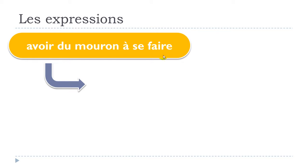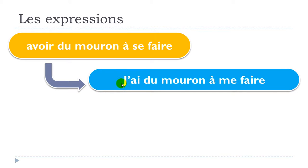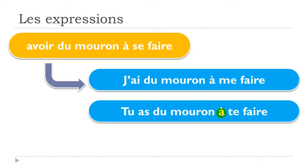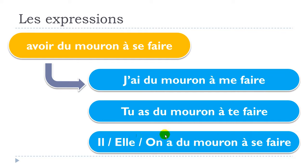The expression is AVOIR DU MOURON À SE FAIRE. We will have to change the SE part according to the subject. For the first person singular: J'ai DU MOURON À ME FAIRE. For the second person singular: TU as DU MOURON À TE FAIRE. And for the third person singular IL, ELLE, ON: A DU MOURON À SE FAIRE. So ME for first person, TE for second, and SE for third person singular.